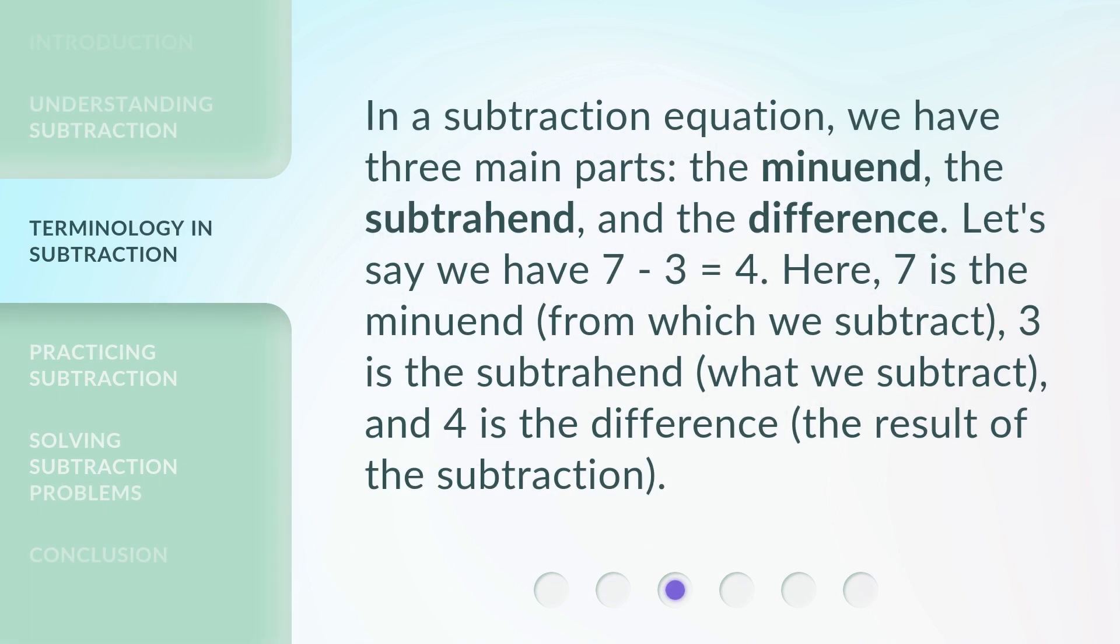In a subtraction equation, we have three main parts: the minuend, the subtrahend, and the difference. Let's say we have 7 - 3 = 4. Here, 7 is the minuend (from which we subtract), 3 is the subtrahend (what we subtract), and 4 is the difference (the result of the subtraction).